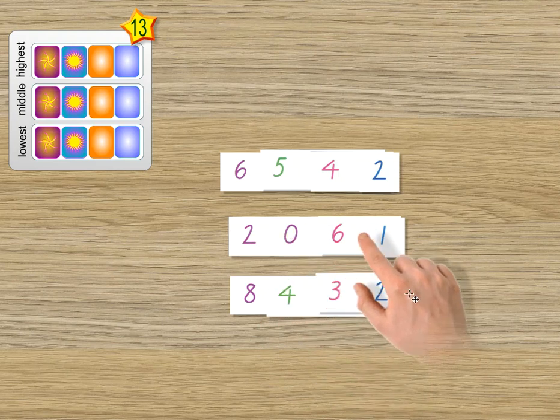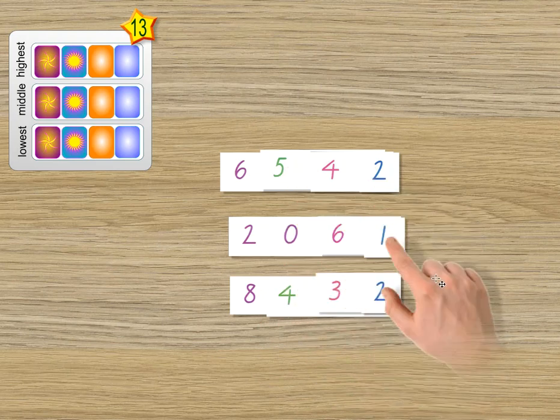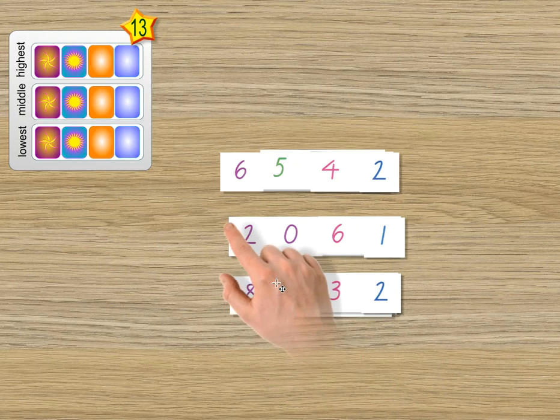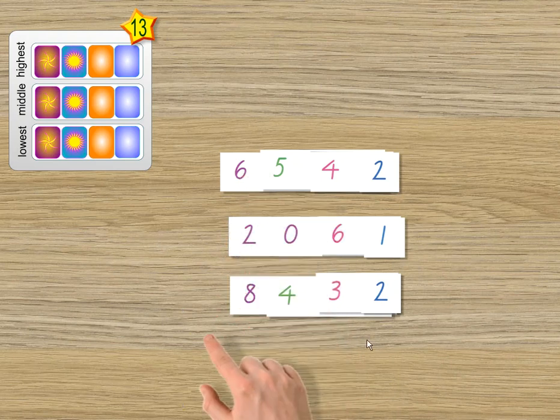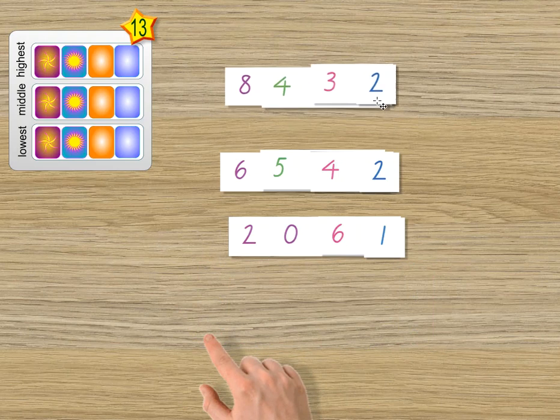So it doesn't matter what's happening in the other values, the other places. If this is at 8,000 and the others aren't near that, then this one has to be the one with the most value. So that goes up here.